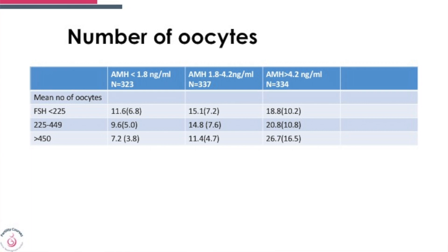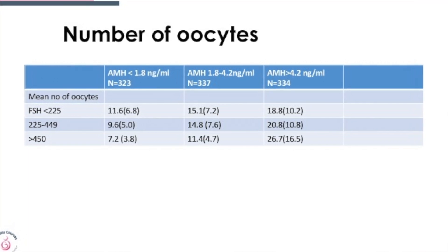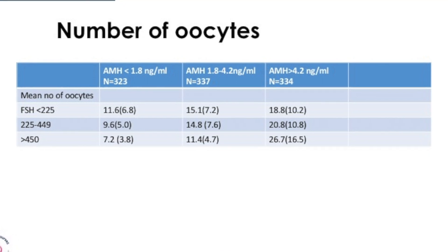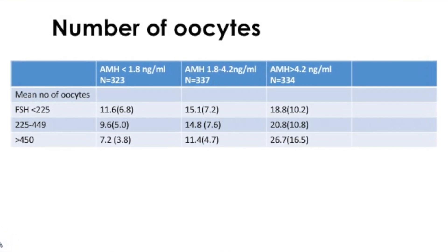They looked at three AMH groups: less than 1.8 nanogram per ml, 1.8 to 4.2 nanogram per ml, and greater than 4.2 nanogram per ml — a reasonably good number of cases. FSH dose groups were: less than 225, between 225 and less than 450, and 450 or more. In the AMH less than 1.8 group, as you increased the dose, the number of oocytes retrieved was actually less. The highest number of oocytes was obtained when the dose was less than 225.